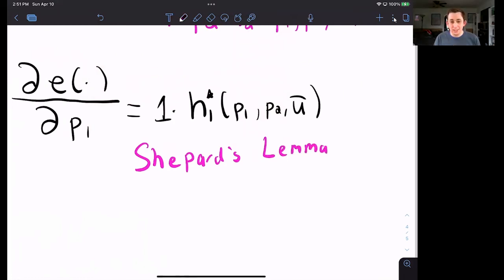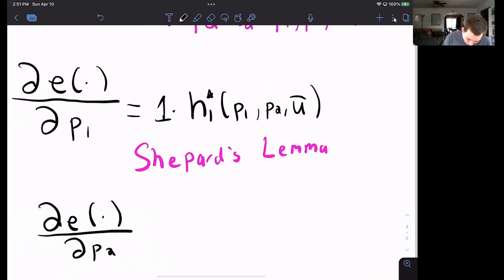Shepard's Lemma for good two is very similar. It's just the derivative of the expenditure function with respect to p two is equal to the Hicksian demand of good two.